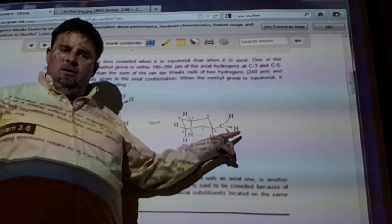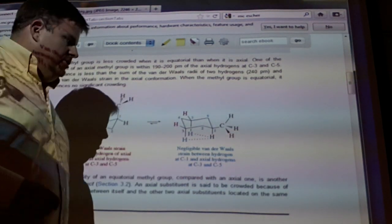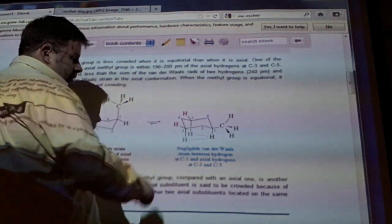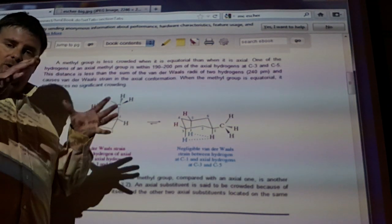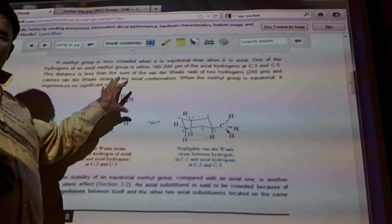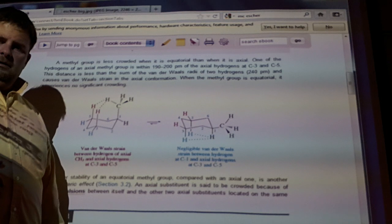So it does what anything in nature does. It adopts the lower energy conformation. And that's this one over here. What's the diaxial interaction I've got? The 1-3 diaxial interaction. 1-3 over here with this hydrogen. 1-3 over here. Now, Van der Waals radii, which is the electron orbits. How much space they occupy is going to be much larger on this CH3 than it is going to be on any of the hydrogens.